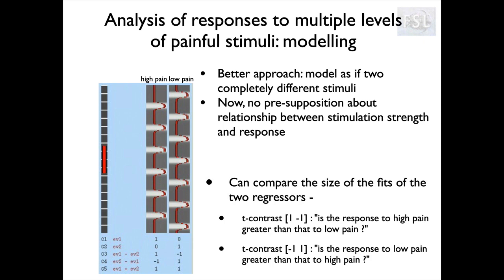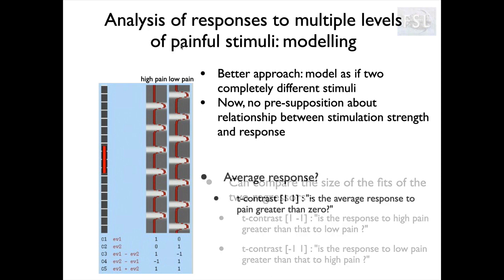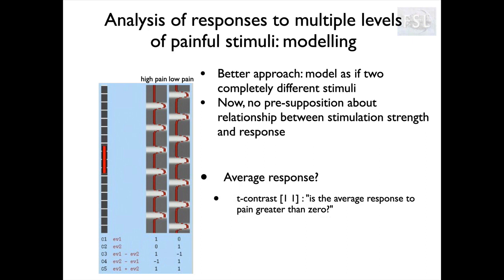Alternatively, we can ask about the difference between conditions. A plus-one minus-one contrast asks where we see a response greater for high pain than for low pain. Similarly, a minus-one plus-one contrast looks for areas with a stronger response in low pain than high pain — which actually does occur in the brain. We can also formulate a plus-one plus-one contrast, which simply asks what the average response to those two conditions is compared to baseline.